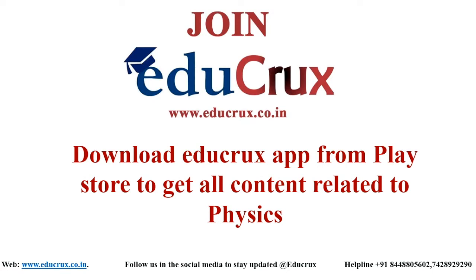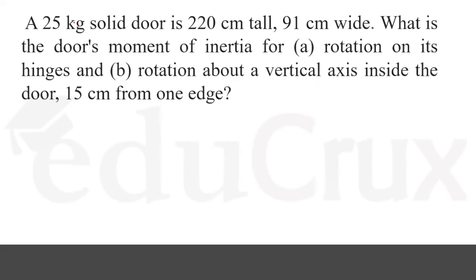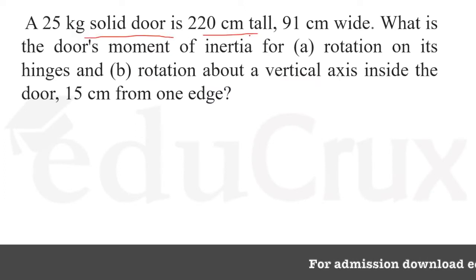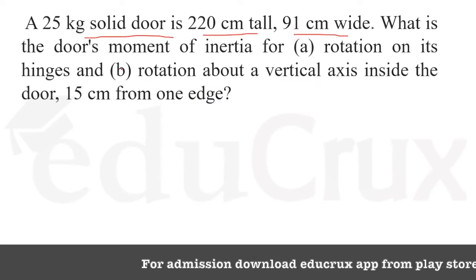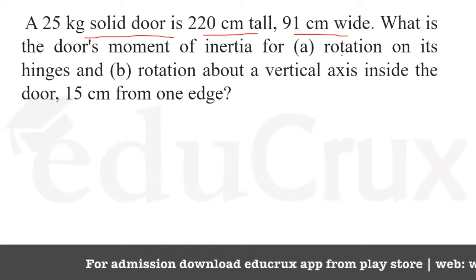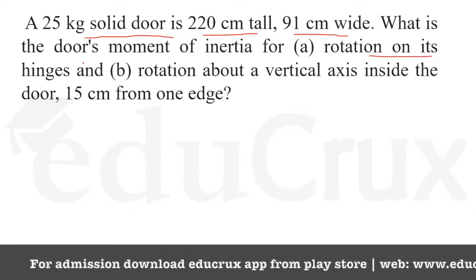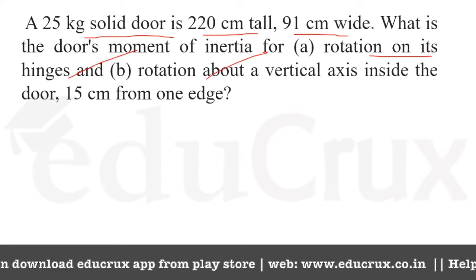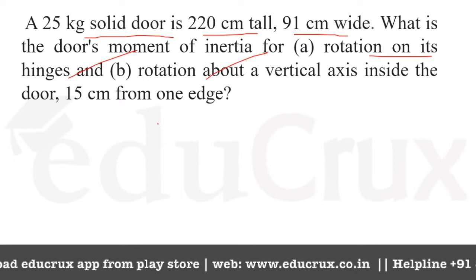Hello everyone, my name is Saloni and today we'll discuss a question helpful for all physics competitive exams. The question says: a 25 kg solid door is 220 cm tall and 91 cm wide. What is the door's moment of inertia for (a) rotation on its hinges, and (b) rotation about a vertical axis inside the door 15 cm from one edge?